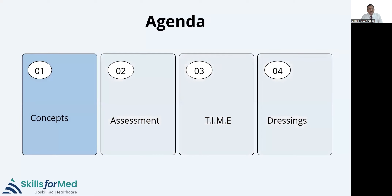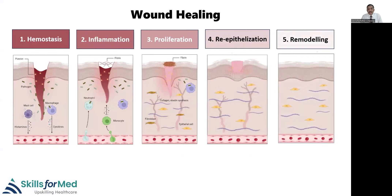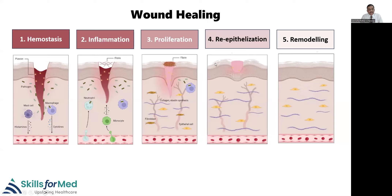Let's first talk about the concepts. Wound healing is a systematic process. Whenever there is a wound there is bleeding, and the first step is to stop the bleeding — hemostasis is the first step. Next is inflammation, where neutrophils are the main cells and macrophages are coming in. Then there is a proliferative phase where the fibrin plug turns into fibrin — the scar — and collagen, elastin synthesis and epithelial cells slowly start coming in. The fourth is re-epithelialization, where the skin over the wound reforms, and finally remodeling of the wound keeps going on for months or years.